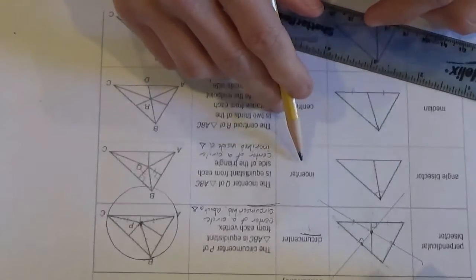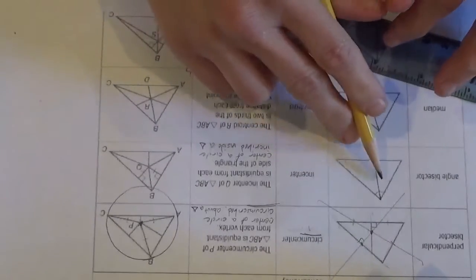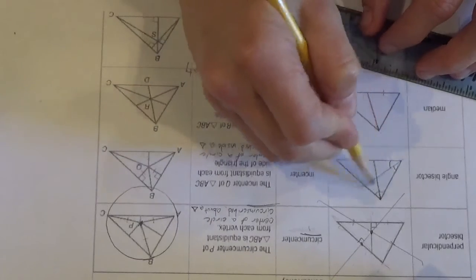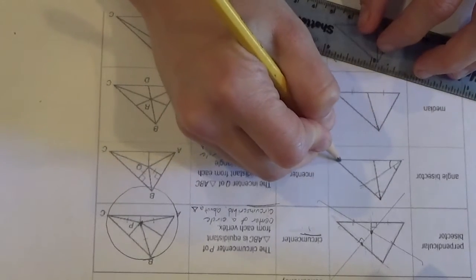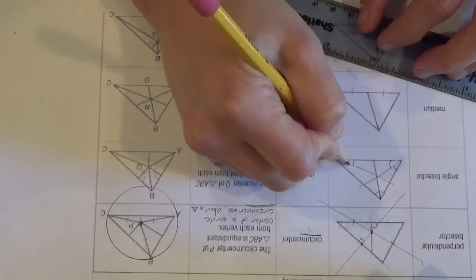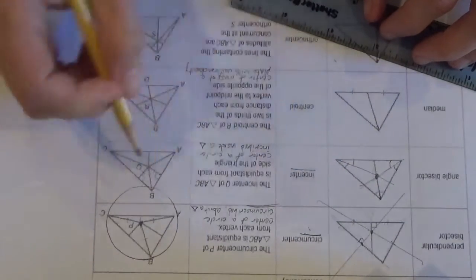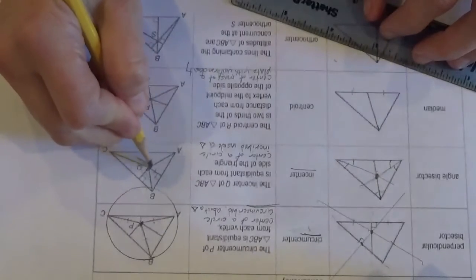Now, the incenter is, if I were to draw all the angle bisectors, so bisect that angle, cut this angle in half, they would all meet at this point here, which we call the incenter, and that point is over here.